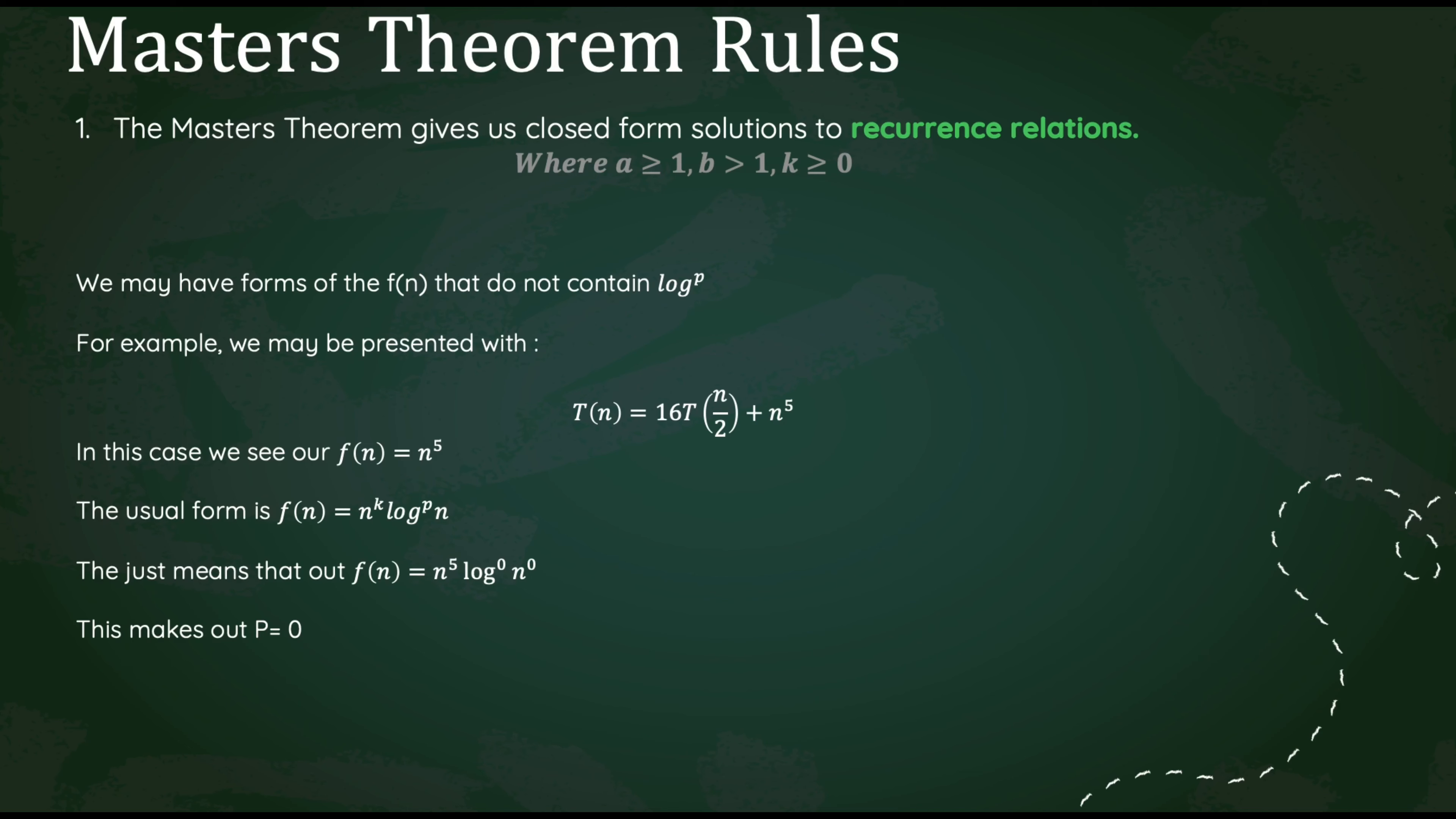We can say our new f(n) format would be n raised to the 5th, log raised to the 0 power, n raised to the 0 power. Simplifying this, we would see that it directly correlates to our f(n) equaling n raised to the 5th power. We know that whatever log is being raised to, that is what our p is. And since log is being raised to 0, this means our p is going to be equal to 0.